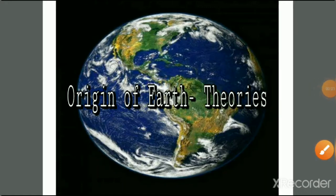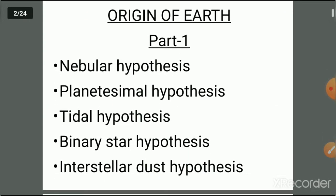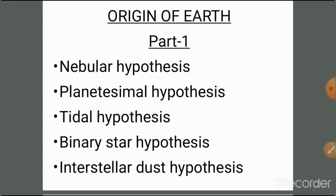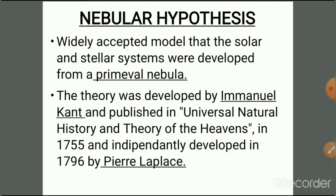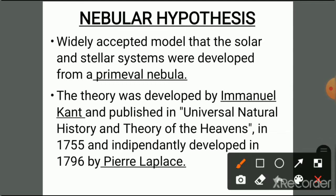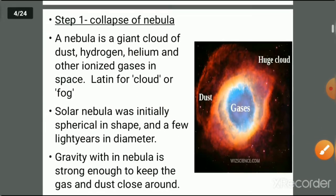We have five different major theories of the origin of Earth. In this section, we are discussing only two theories: the nebular hypothesis and the planetesimal hypothesis. Apart from these, there are other theories that are less popular. The first and most popular theory is the nebular hypothesis, according to which the entire solar system is formed from a primeval nebula. The theory was developed by Immanuel Kant in 1755 and Pierre Laplace in 1796.